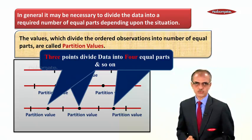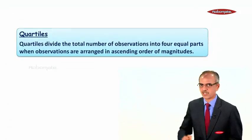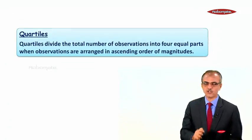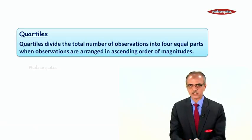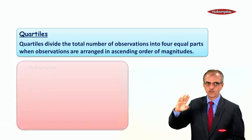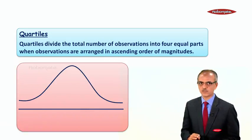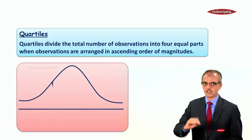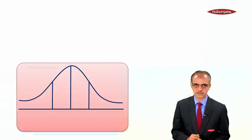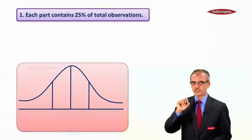We are going to learn quartiles as one of the partition values. Quartiles divide the total number of observations into four equal parts when the observations are arranged in ascending order of their magnitudes.